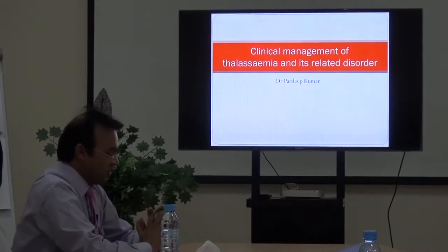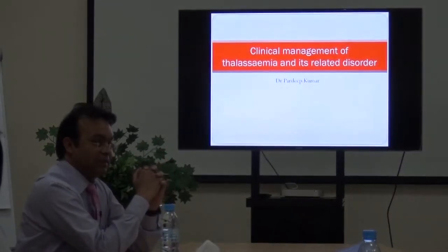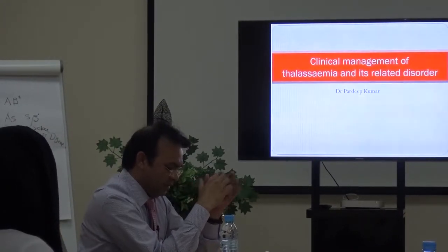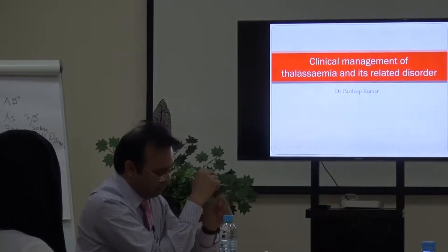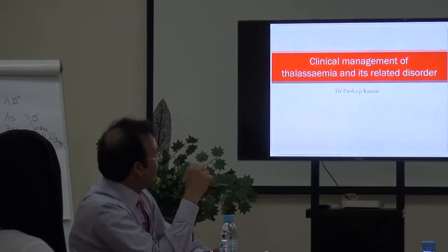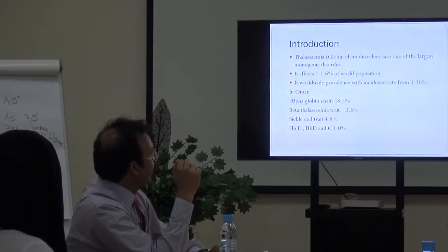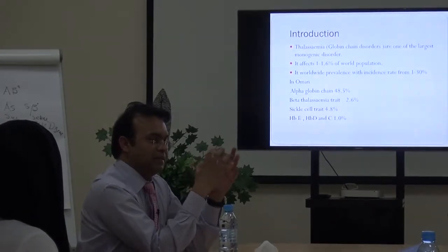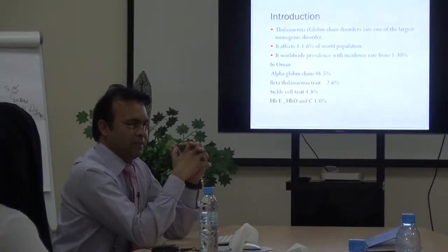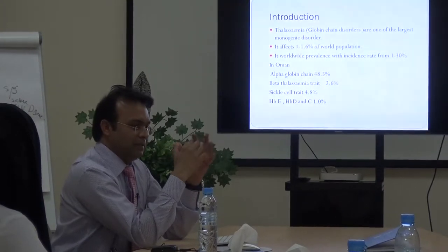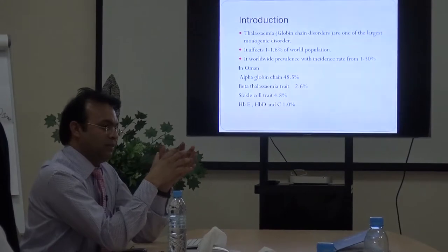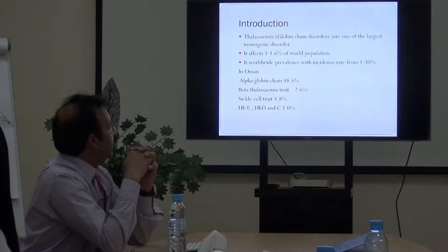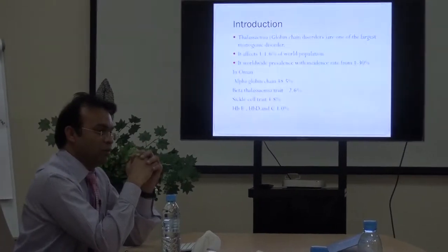Today I'm going to discuss the clinical side of thalassemia disorders and how to manage them. As you are quite expert in the genetic side, we will focus on the clinical management. Thalassemia is basically a globin chain disorder where there is underproduction of any one of the globin chains, leading to anemia. The unaffected chain has increased production, leading to hemolysis. This is one of the largest monogenic disorders, affecting around one to two percent of the population.